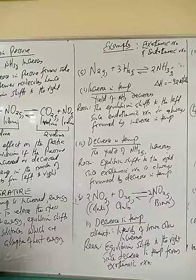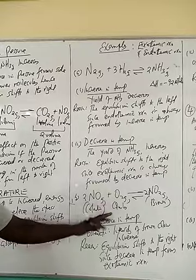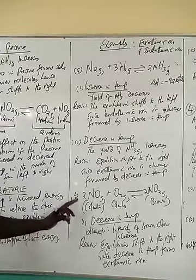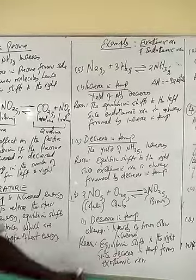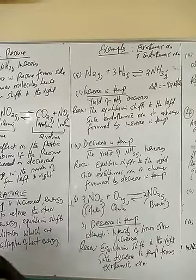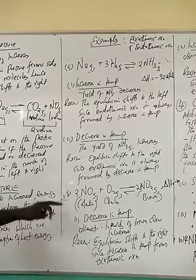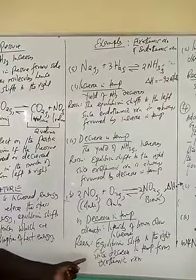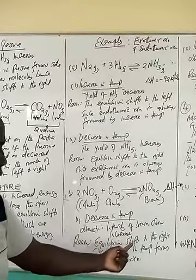Look at the second example: a reaction between nitrogen dioxide (NO₂) and oxygen, where nitrogen dioxide and oxygen gases are both colourless, and nitrogen tetroxide (N₂O₄) is brown. If you decrease the temperature of the system, the intensity of the brown colour will increase. Because this forward reaction is an exothermic reaction — if you decrease the temperature, the equilibrium shifts to the right, since the decrease in temperature favours the exothermic forward reaction. And in the process, the intensity of the brown colour will increase.